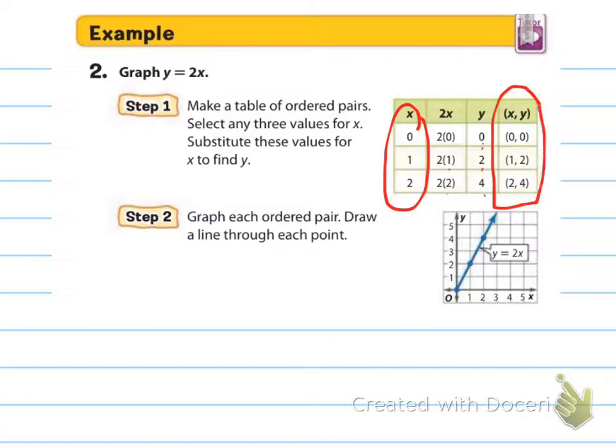When we make our ordered pairs, that's going to be our X comma Y. So 0 comma 0, 1 comma 2, and 2 comma 4. Then we're going to graph each of our ordered pairs and draw a line through each point. If it becomes a straight line, then we know that we have a linear function and a linear equation. Our 0 comma 0 is here, 1 comma 2 is here, and 2 comma 4 is here. Sure enough, when we connect those, it's a beautiful straight line. Using graph paper is key here because if we make our own, we're not distancing everything perfectly.